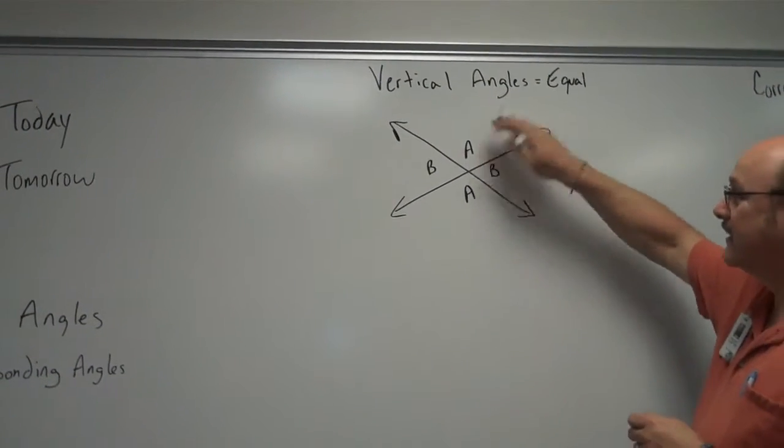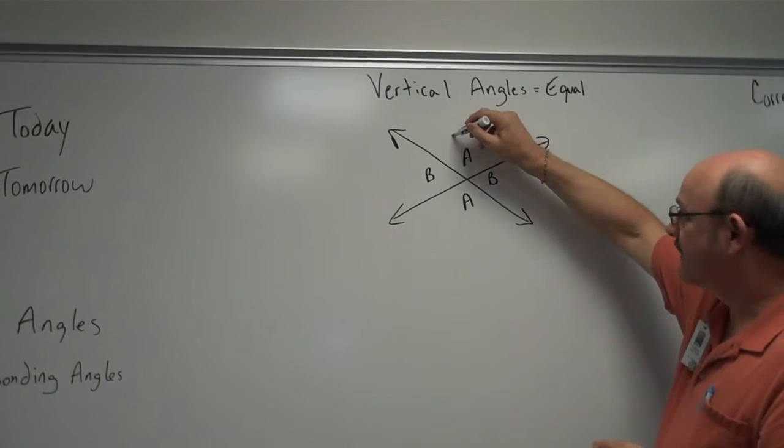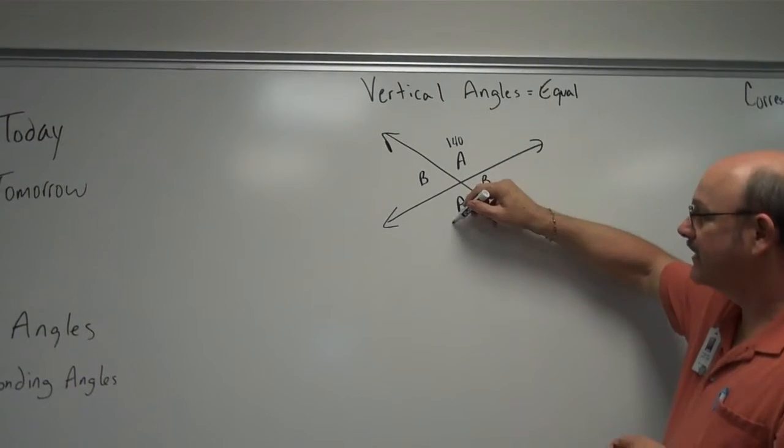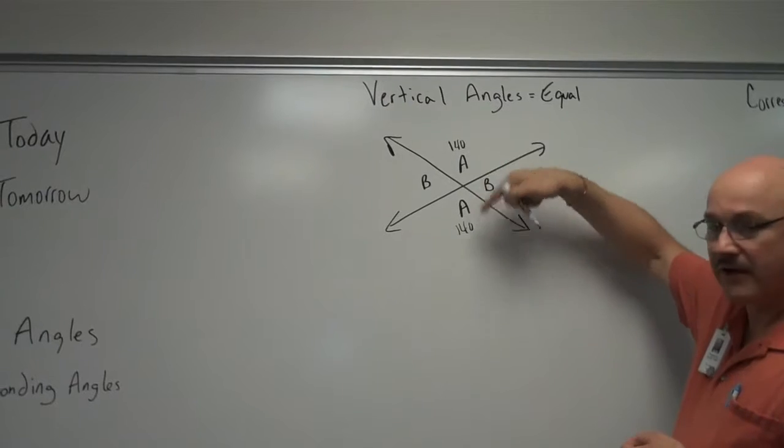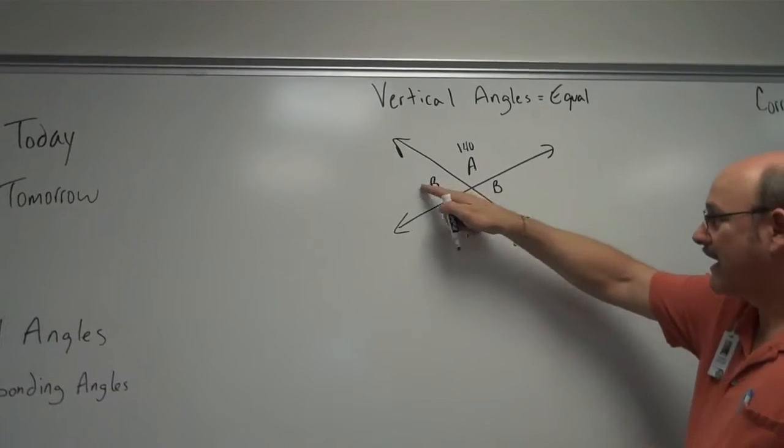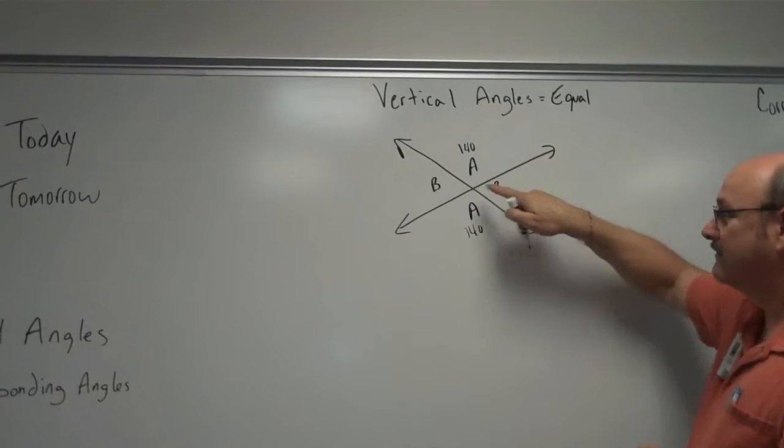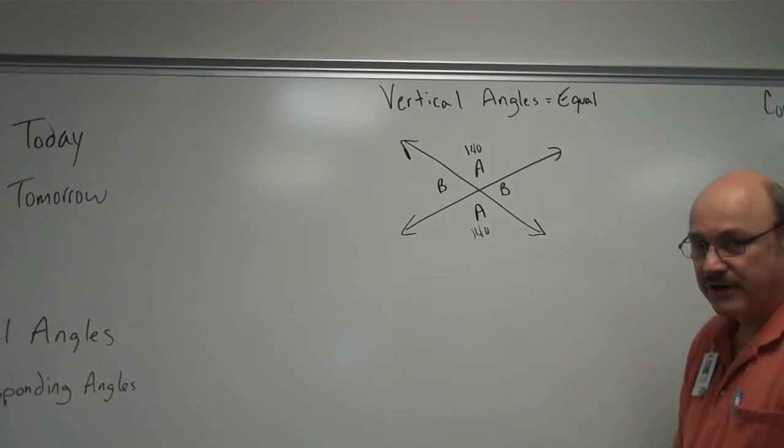So if I knew that this angle here was 140 degrees, then I know this angle is 140. They are equal. Likewise, these two are across from each other. They are vertical angles. They are equal.